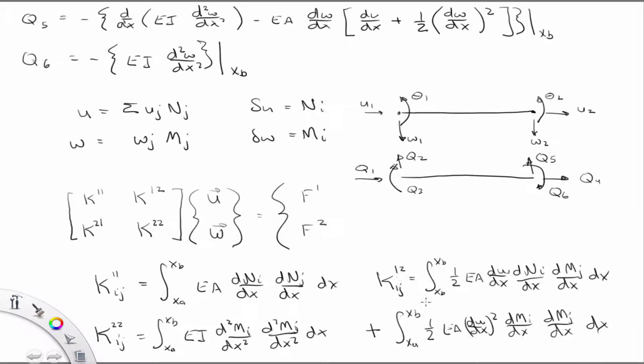Well, the second term in K22, right? Previous to this, we only had in the stiffness matrix terms that were derivatives of the shape functions, or the shape functions themselves, right?